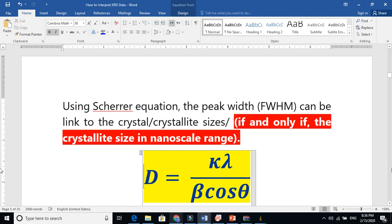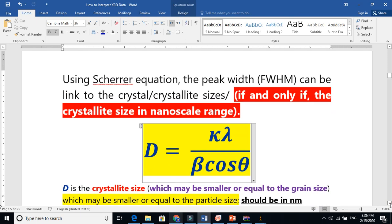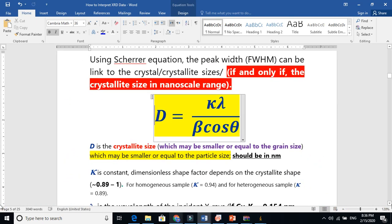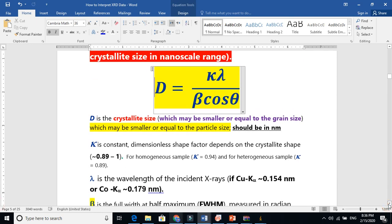Now let us use this Scherrer equation, how we can estimate the crystallite size from full width at half maxima. This is the crystallite size D here, which may be smaller or equal to grain size. I talked about this, and it should be also equal to particle size. But in this case, we will say those are exceptional cases. Here we will take this in nanometers, the crystallite size.